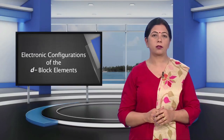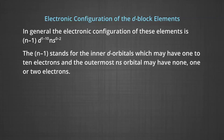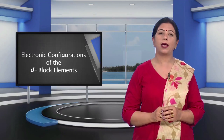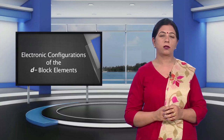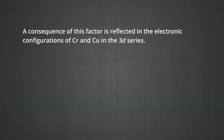The electronic configuration of the D block elements: in general, the electronic configuration is (N-1)D¹⁻¹⁰ NS⁰⁻². The (N-1)D stands for the inner D orbitals, which may have 1 to 10 electrons, and the outermost NS orbital may have none, 1 or 2 electrons. This generalization is because of very little energy difference between (N-1)D and NS orbitals. Furthermore, half and completely filled sets of orbitals are relatively more stable.